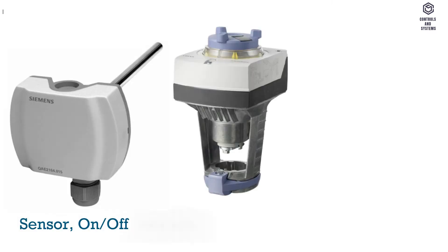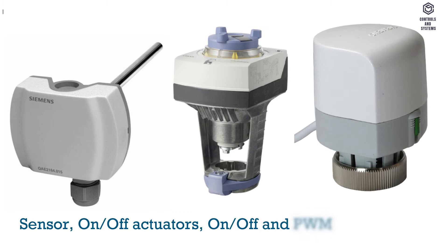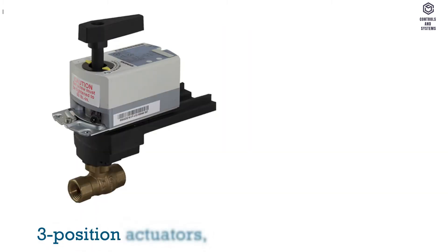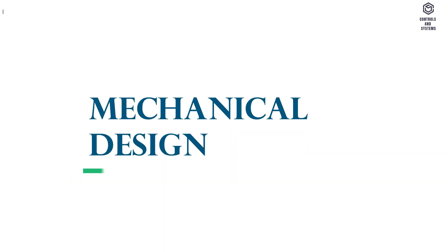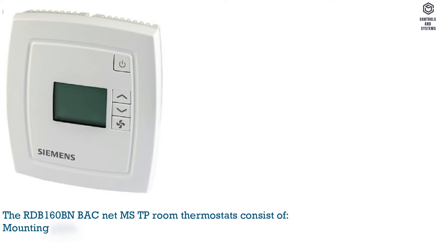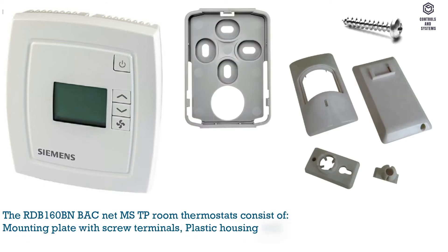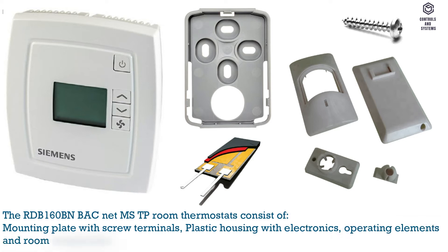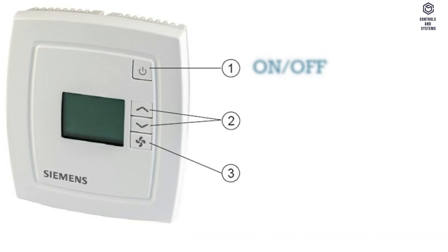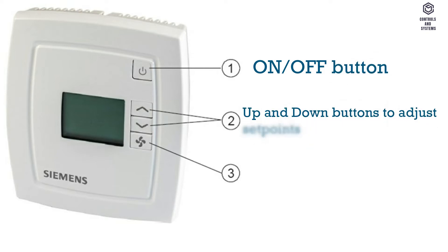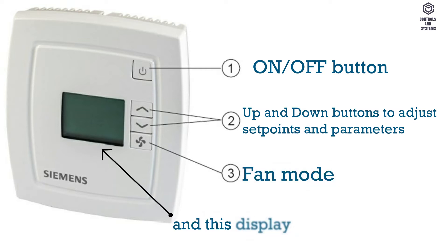Equipment combinations include: sensor, on/off actuators, on/off PWM actuators, three-position actuators, and DC 0–10 V actuators. Mechanical design: the RDB 160BN BACnet MS/TP room thermostats consist of a mounting plate with screw terminals, plastic housing with electronics, operating elements, and a room temperature sensor. Operation: the display is operated using the buttons on the controller — (1) on/off button, (2) up and down buttons to adjust set points and parameters, (3) fan mode button. The display has a backlight LCD.